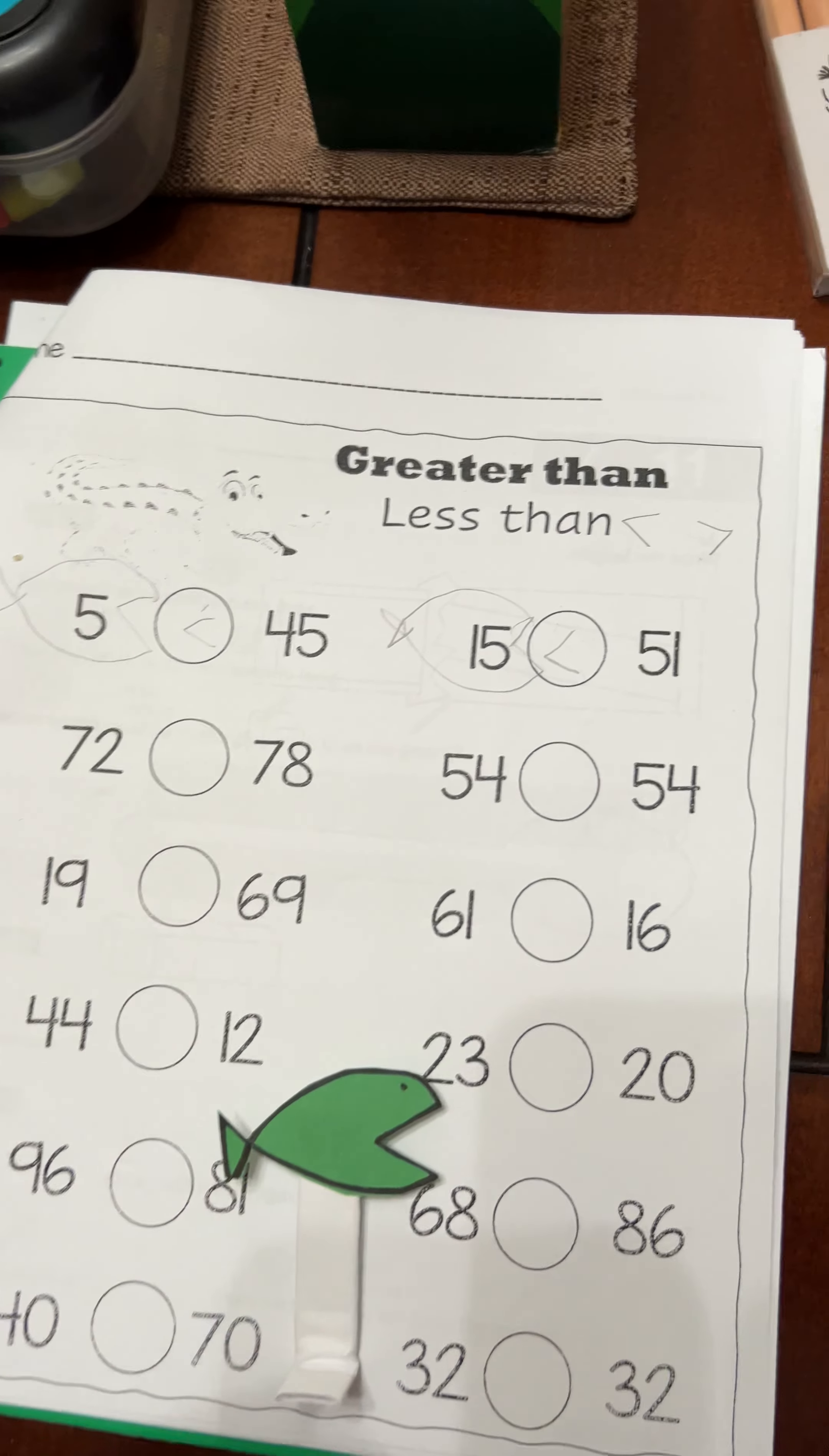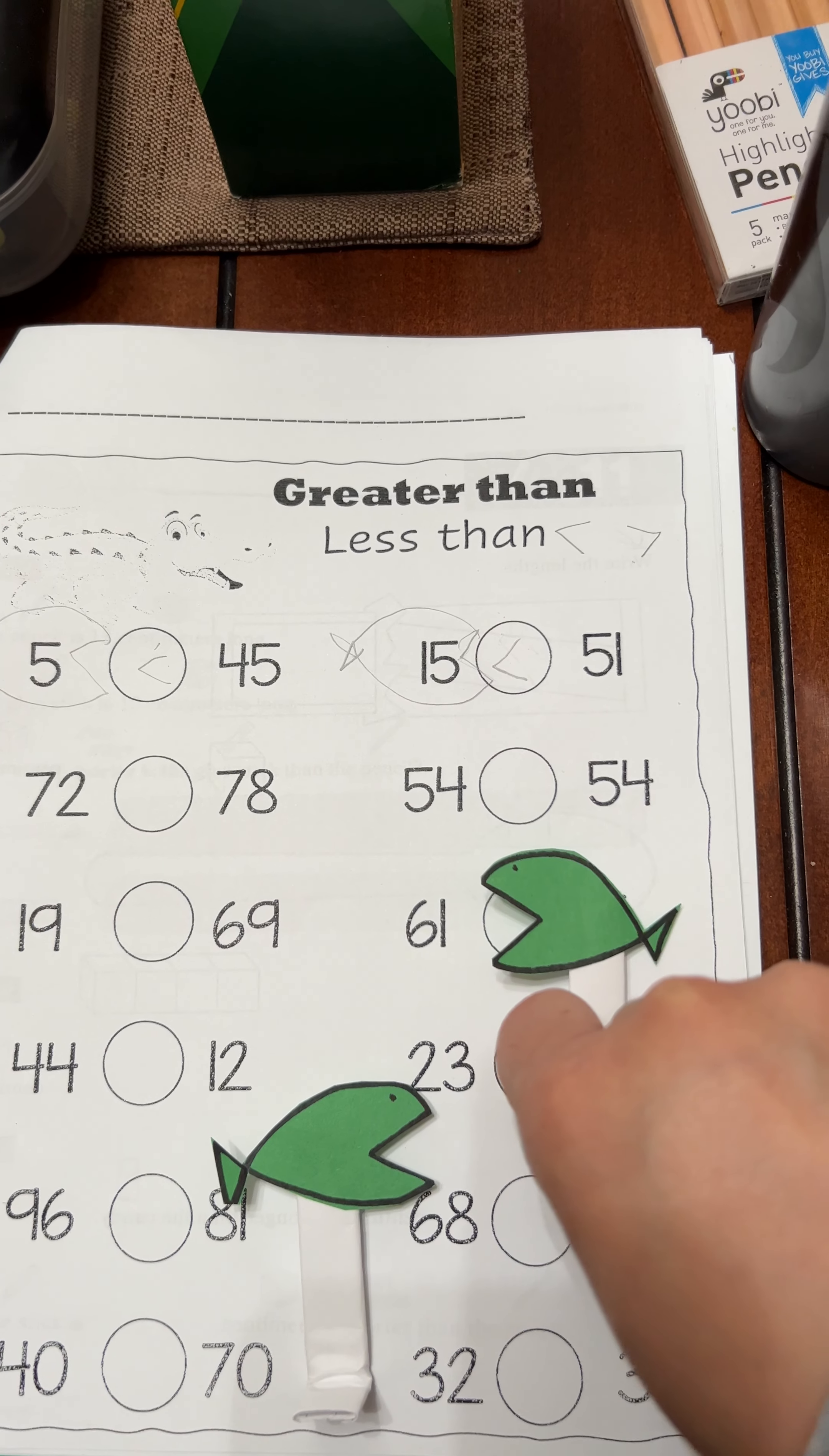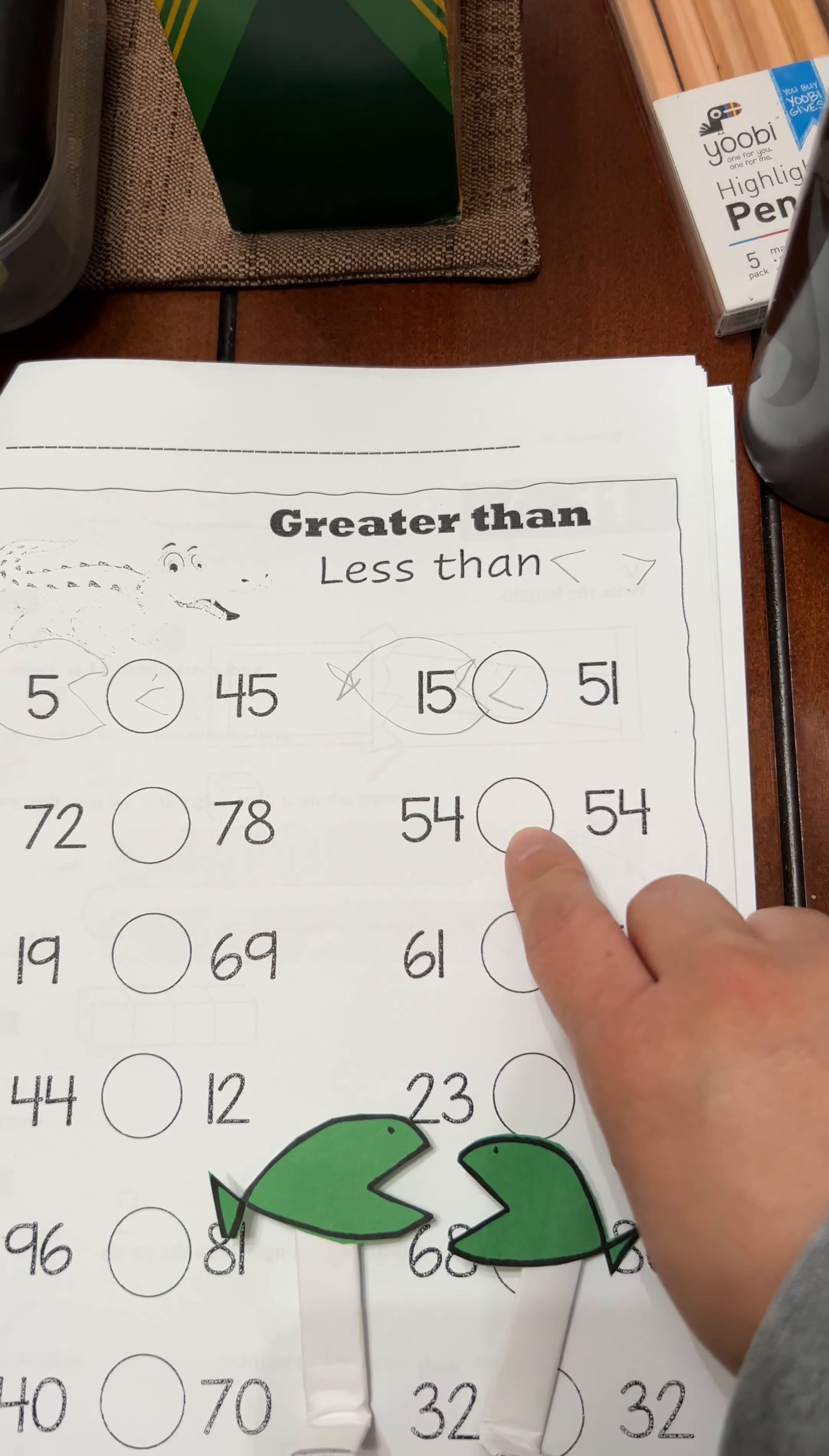And then over here, let's see, 16 smaller than 61, so the fish ate 16 and now he knows the direction the fish will be. Obviously, if the numbers are equal, we'll just put the equal sign here.